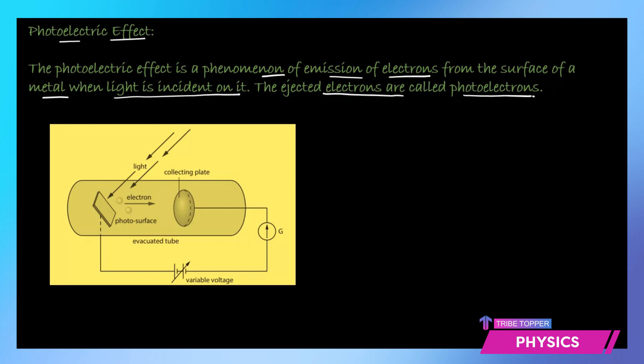As you can see here, a metal surface which we call as a photo surface is enclosed in a tube. When light is incident on this metal surface, the free electrons which were lying in this metal surface were not able to leave the surface. But the moment some high frequency or a particular energy of light is incident on this metal surface, the electrons are emitted. And that phenomenon of the emission of electrons is known as the photoelectric effect.